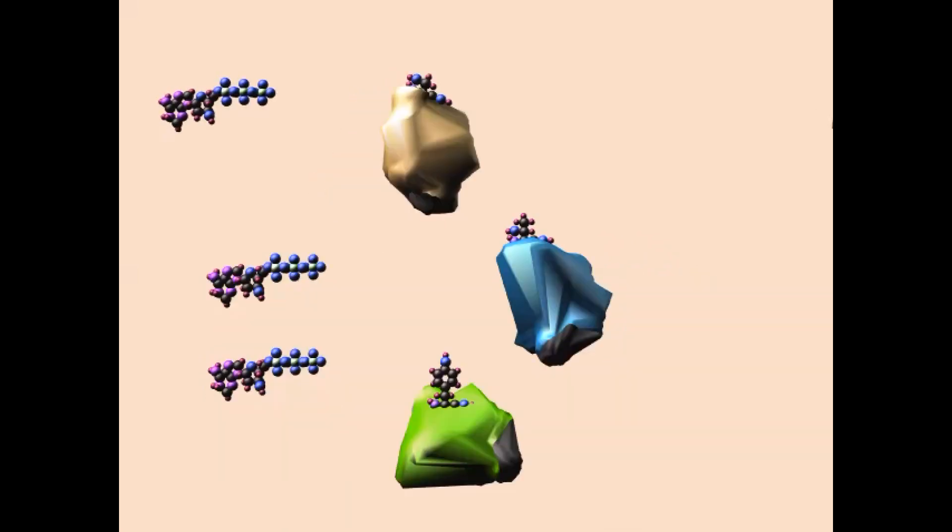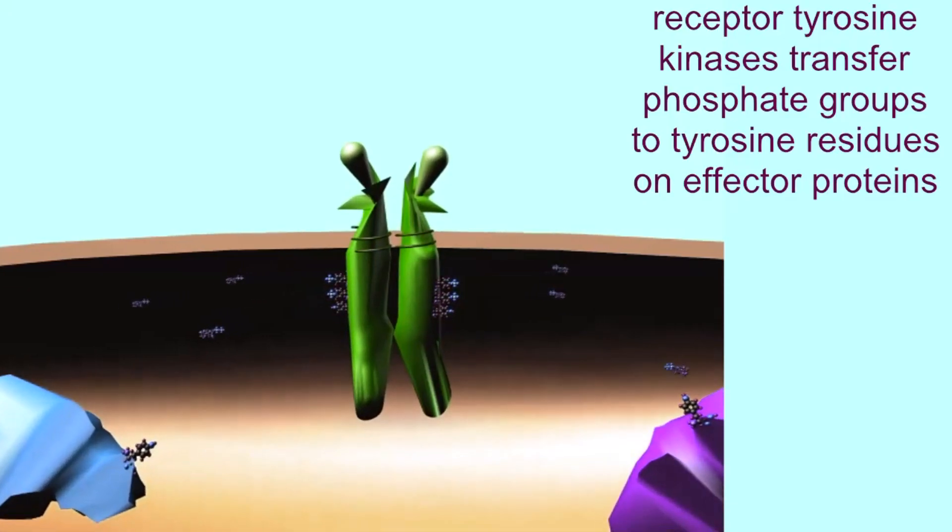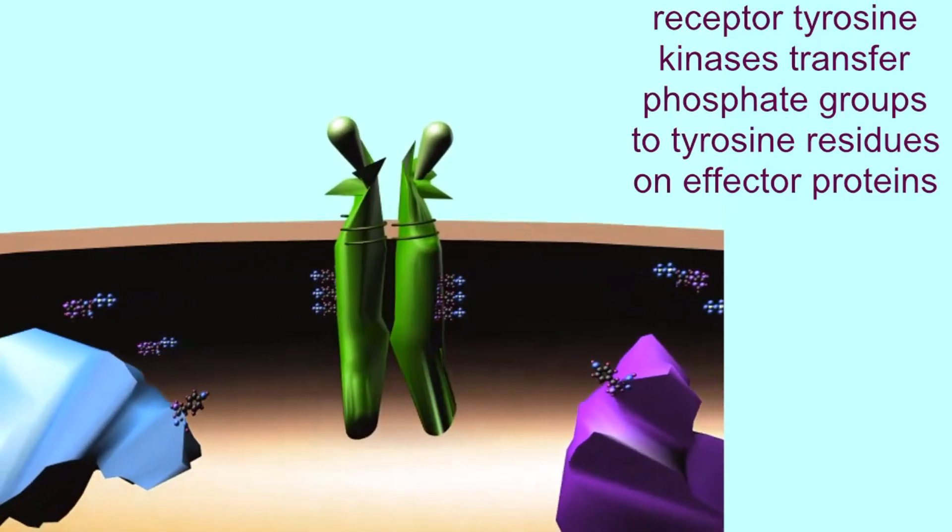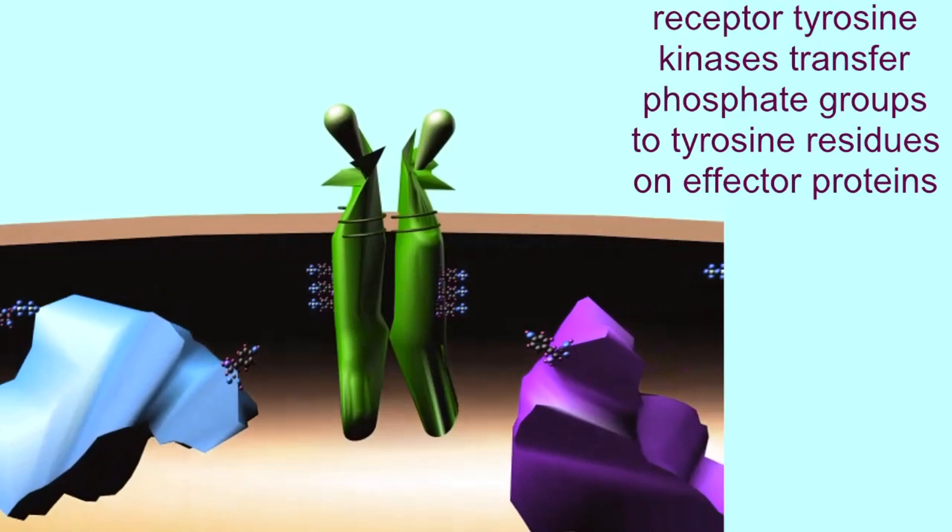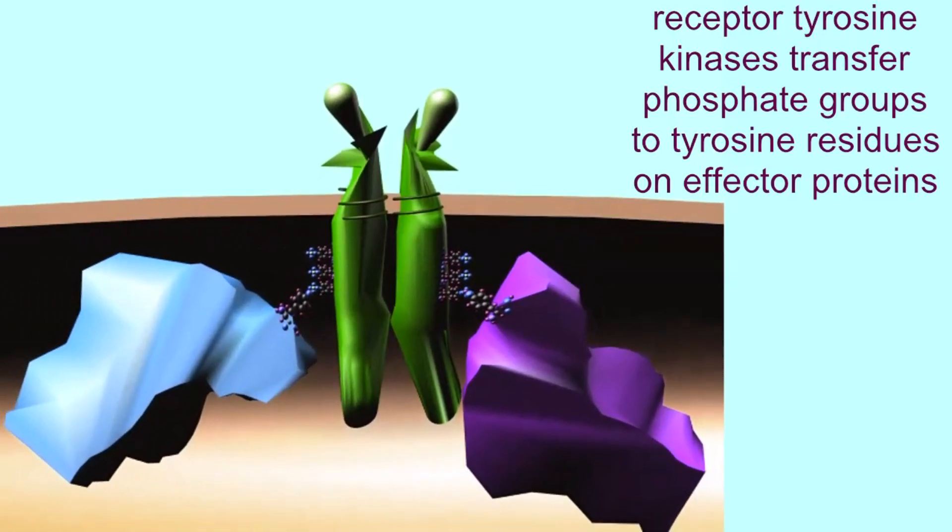Perhaps the most important mechanism in the post-translational regulation of protein activity is the addition or removal of phosphate groups on specific amino acids of these proteins. Many intracellular proteins are off until phosphate groups are added to them, at which point they are on. These phosphates are added to specific amino acids of the protein, such as serine, threonine, and tyrosine.